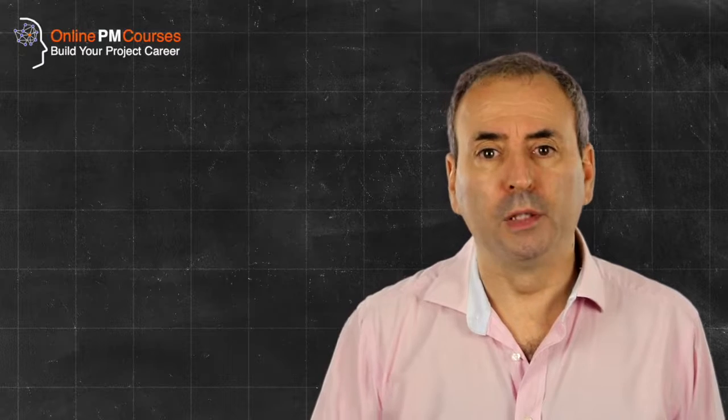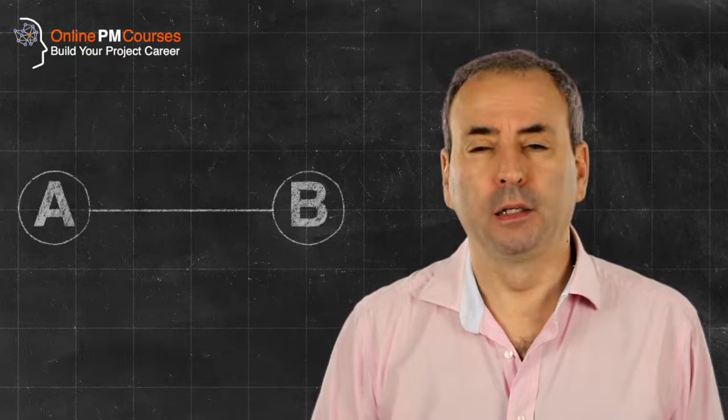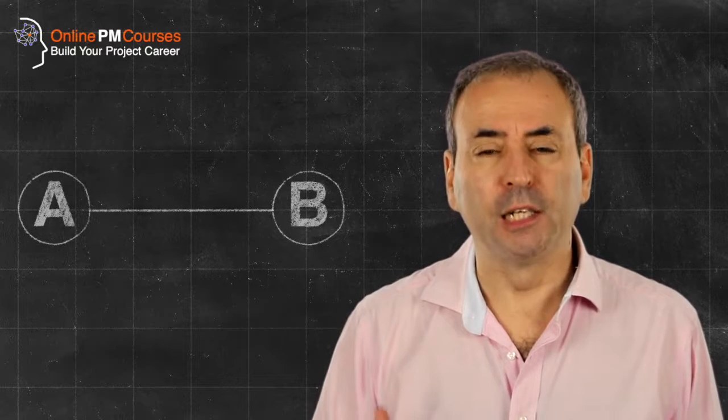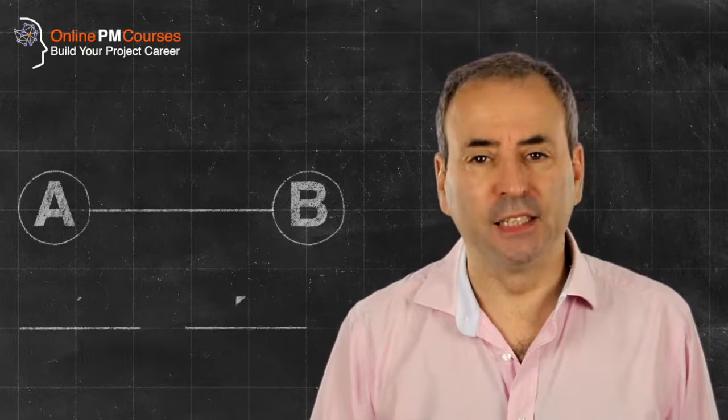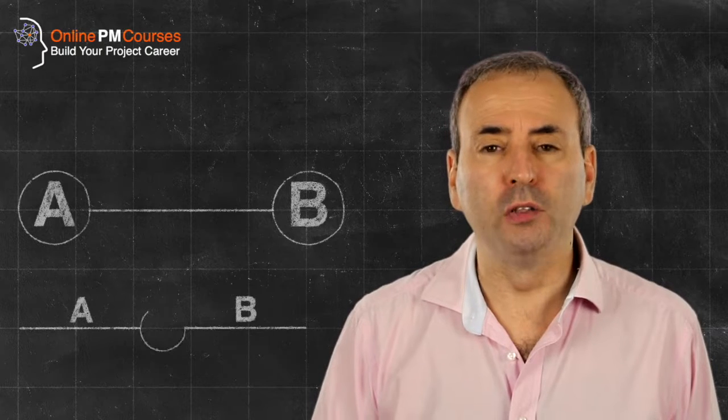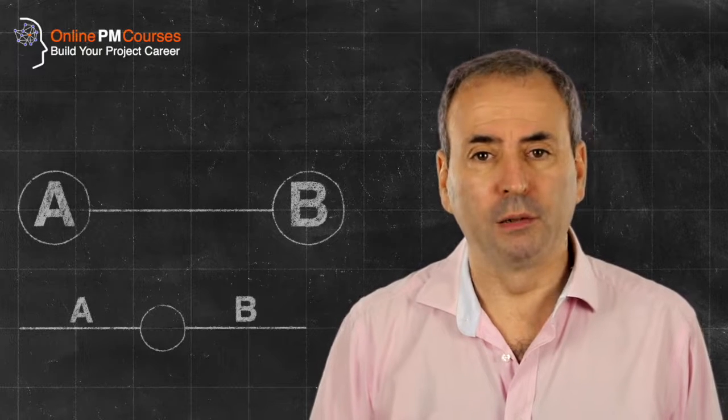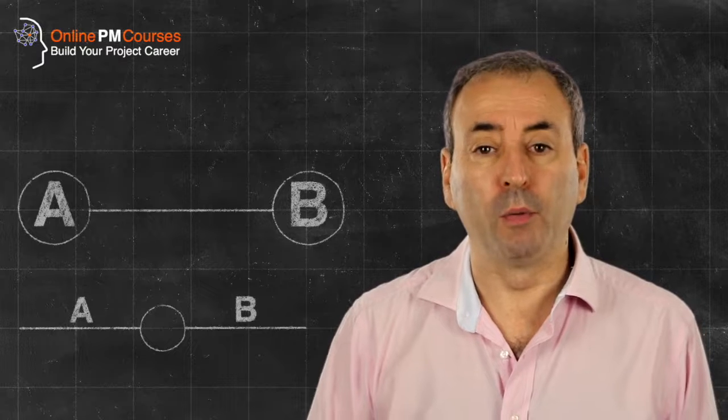PERT charts are less frequently used than their more commonly seen sibling, the critical path method. The critical path method uses activities on nodes and those activities are connected up by lines. The PERT technique flips it over and shows the activities on the connecting lines, and then the nodes represent the branching structure of the network chart.